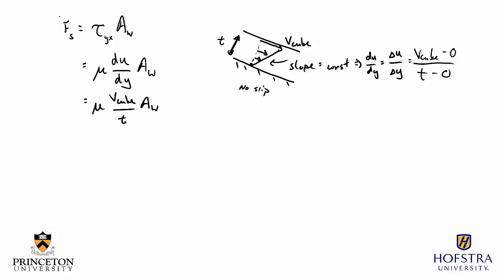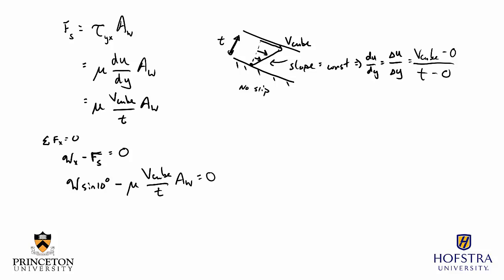Returning to the sum of forces in the x direction equal to zero: the weight times sine of 10 degrees minus the viscosity times V cube divided by the thickness times the wetted area equals zero. Substituting: mass times g times sine of 10 degrees minus mu times V cube over thickness times wetted area equals zero.